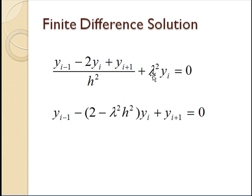Put in yi for this term here. And then all we do is multiply through by h squared and collect terms of yi, and we get this. So yi minus 1 minus the quantity 2 minus lambda squared h squared yi plus yi plus 1 equals 0.